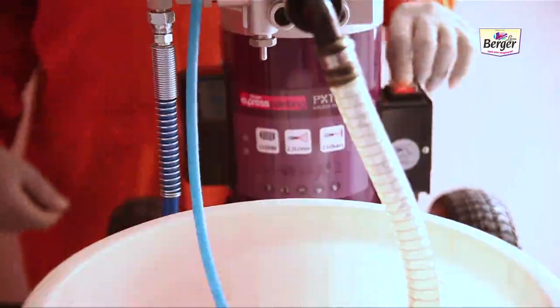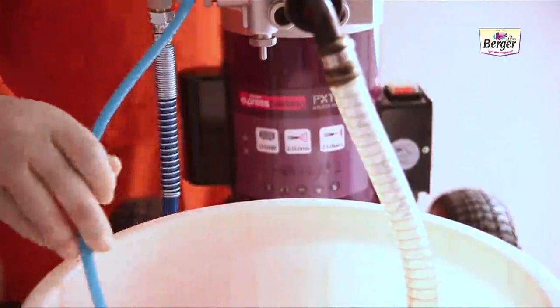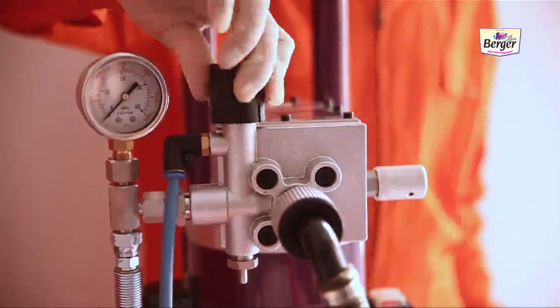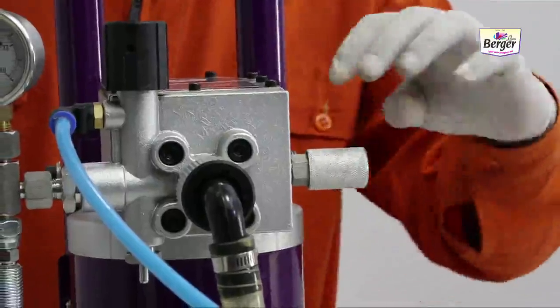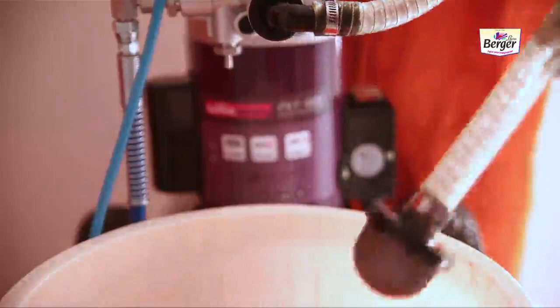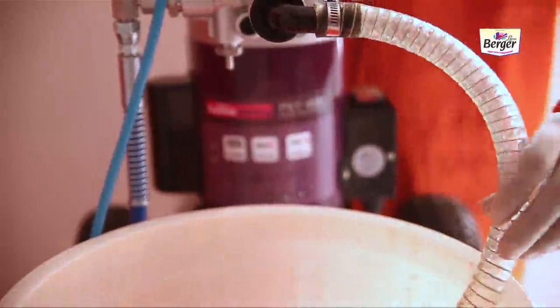The machine starts working by pressing the start button. Turn the prime valve downwards. Start motor by increasing pressure. Put siphon tube into the paint bucket.